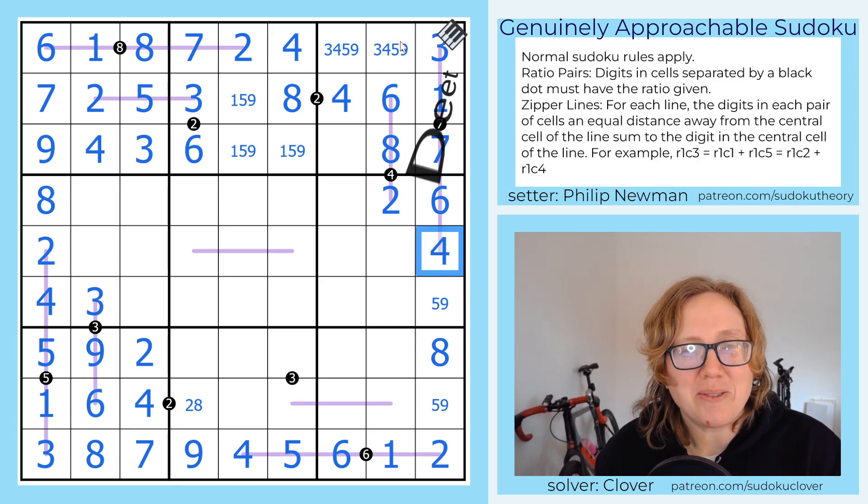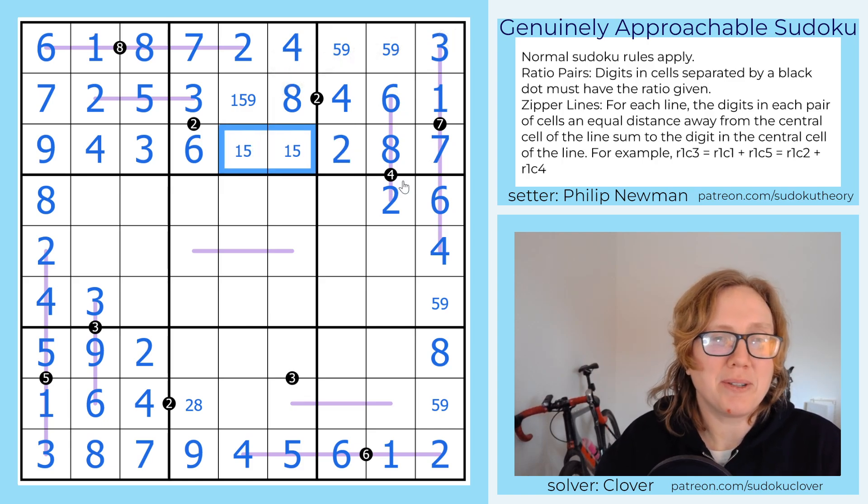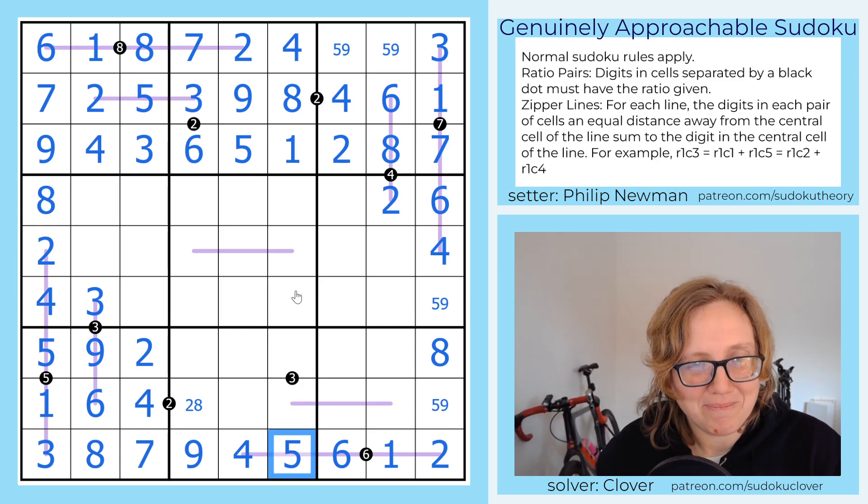So now how do I do a 1 to 2 ratio with a 3 in it? That is going to be a 6. These cells are going to contain 1, 4, 5, and 9. And by Sudoku, none of these guys can be 4, so that's going to be a 4. Oh, and that finally gives us the orientation of our 3, 4 pair. That's just fantastic.